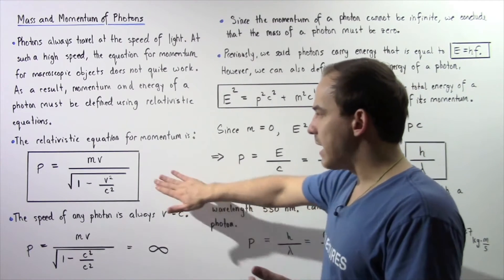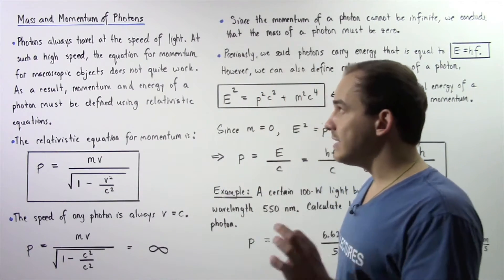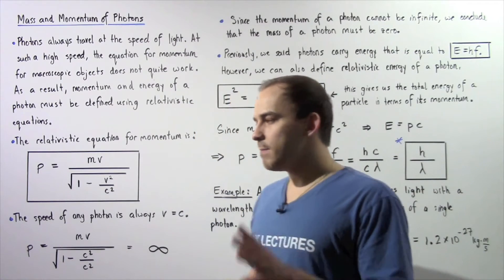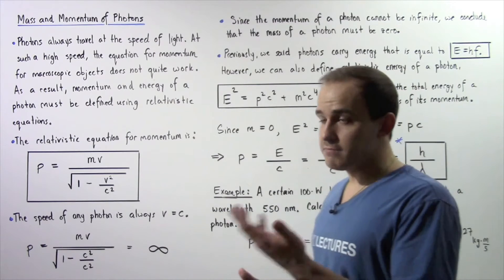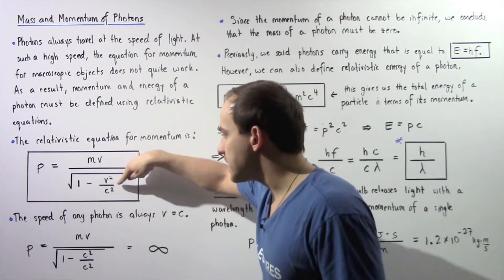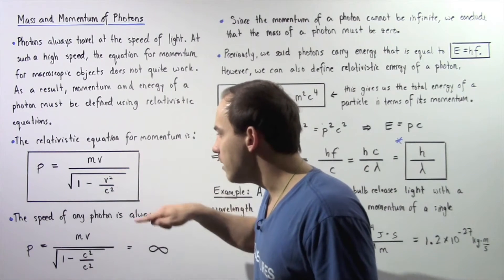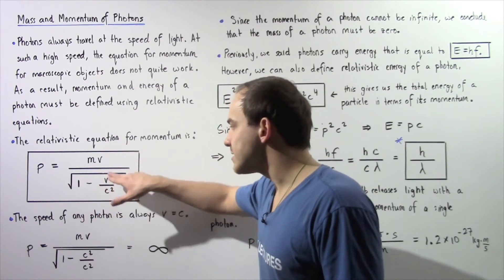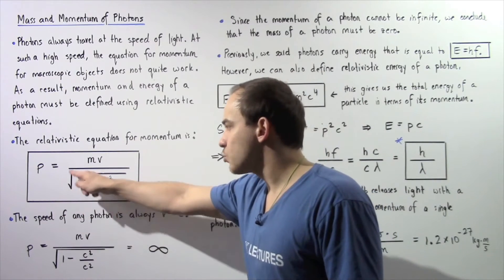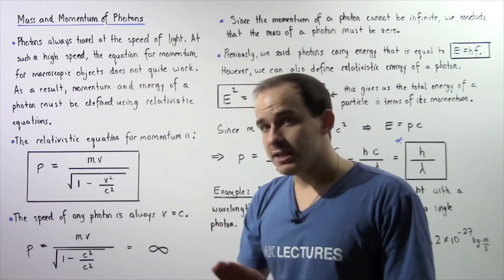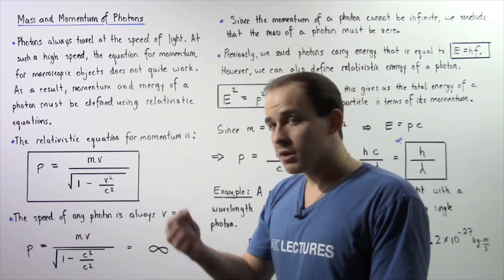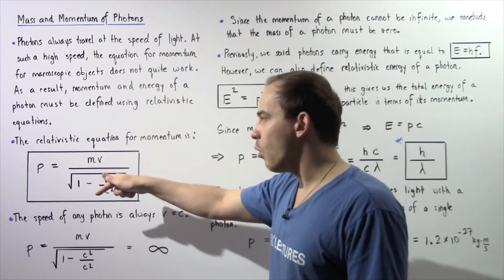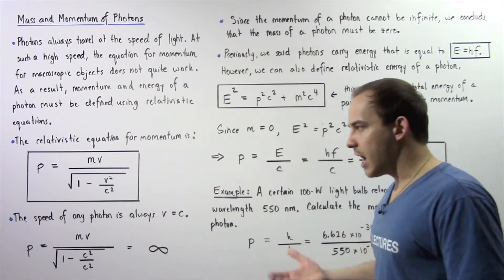Notice one interesting fact about this equation. If we're dealing with a macroscopic object traveling at a velocity very low compared to the velocity of light — say 10 meters per second — then the fraction V² divided by C² is a very small number divided by a very large number, approximately equal to zero. So one minus a very small number is approximately one, and the square root of one is one. This equation then simply amounts to m times V, which is the classical equation for momentum.